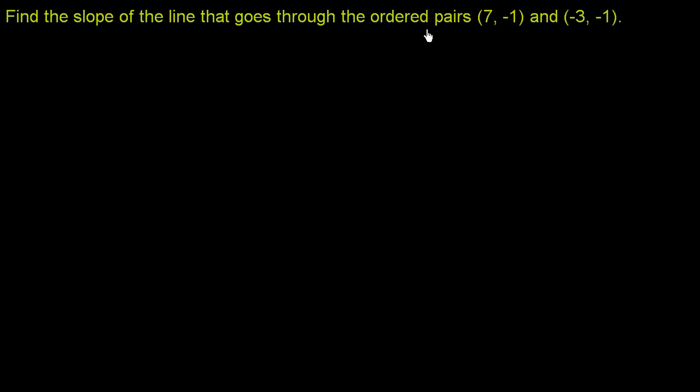Find the slope of the line that goes through the ordered pairs 7 comma negative 1 and negative 3 comma negative 1. Let me just do a quick graph of these, just so we can visualize what they look like.